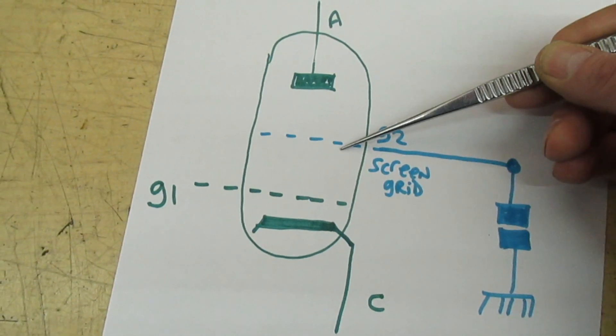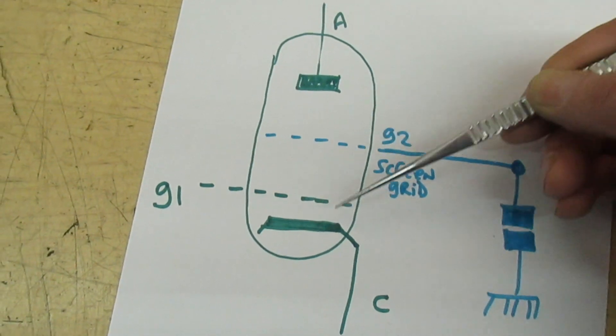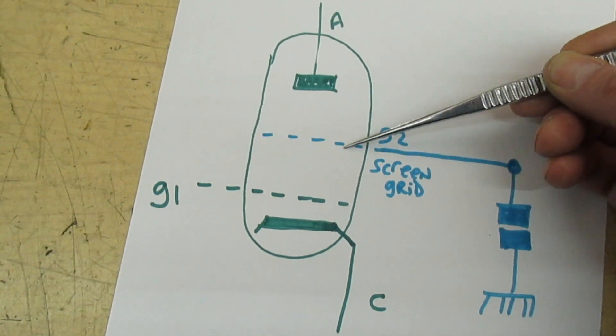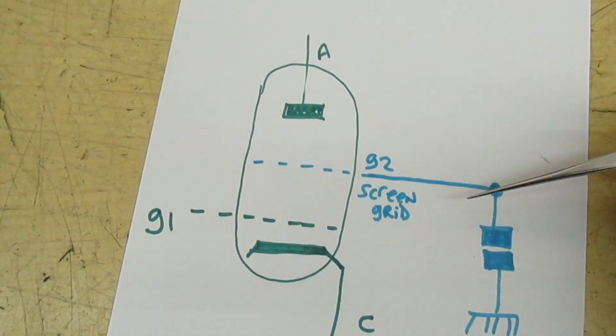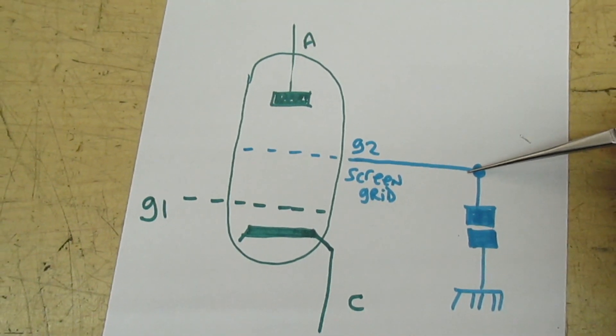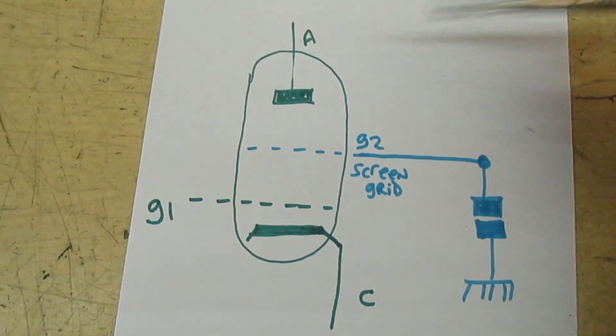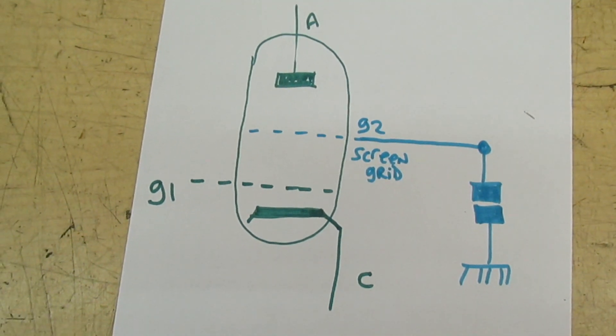If we made the screen grid too positive, the electrons would flow from the cathode and stop at the screen grid, and you'd have screen grid current. We make it a bit lower in voltage than the anode itself by introducing a resistor between here and the HT rail.